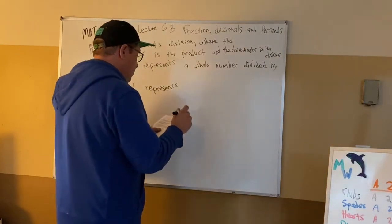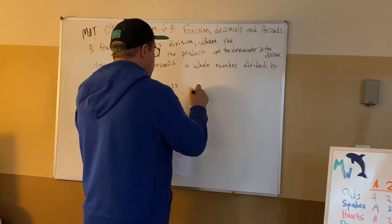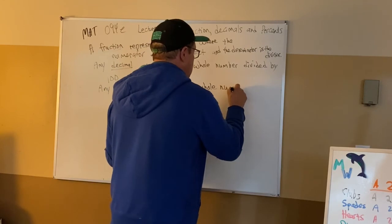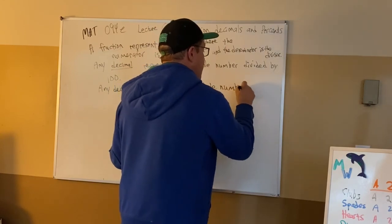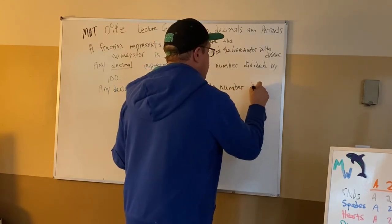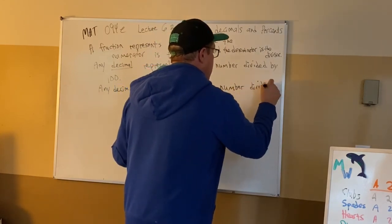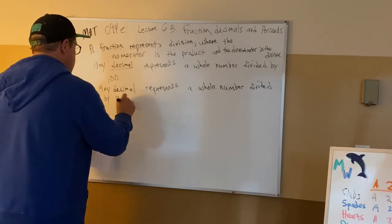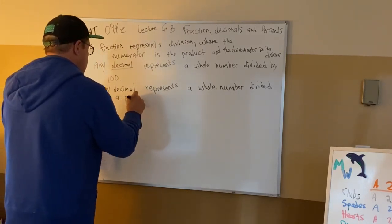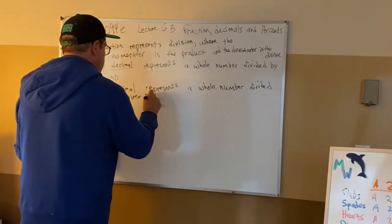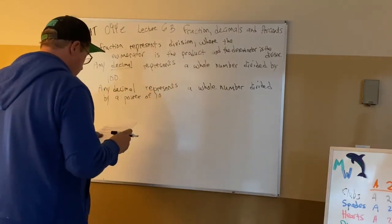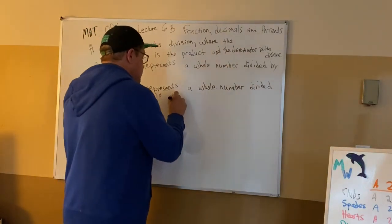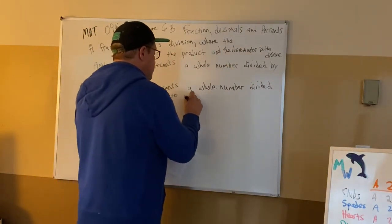Any decimal represents a whole number divided by a power of 10, to match its number of decimal places.